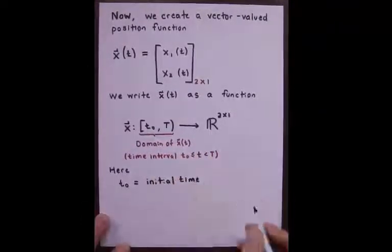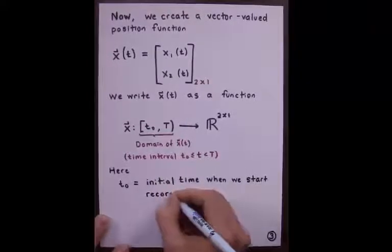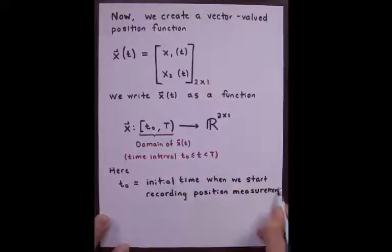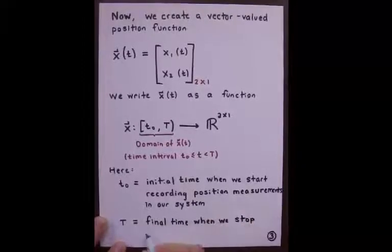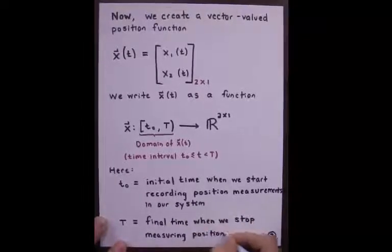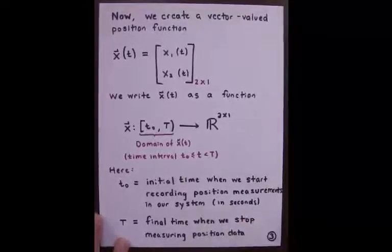T naught is the initial time when we start recording position measurements in our system. Capital T is the final time when we stop measuring position data. Of course, both of these are in seconds.